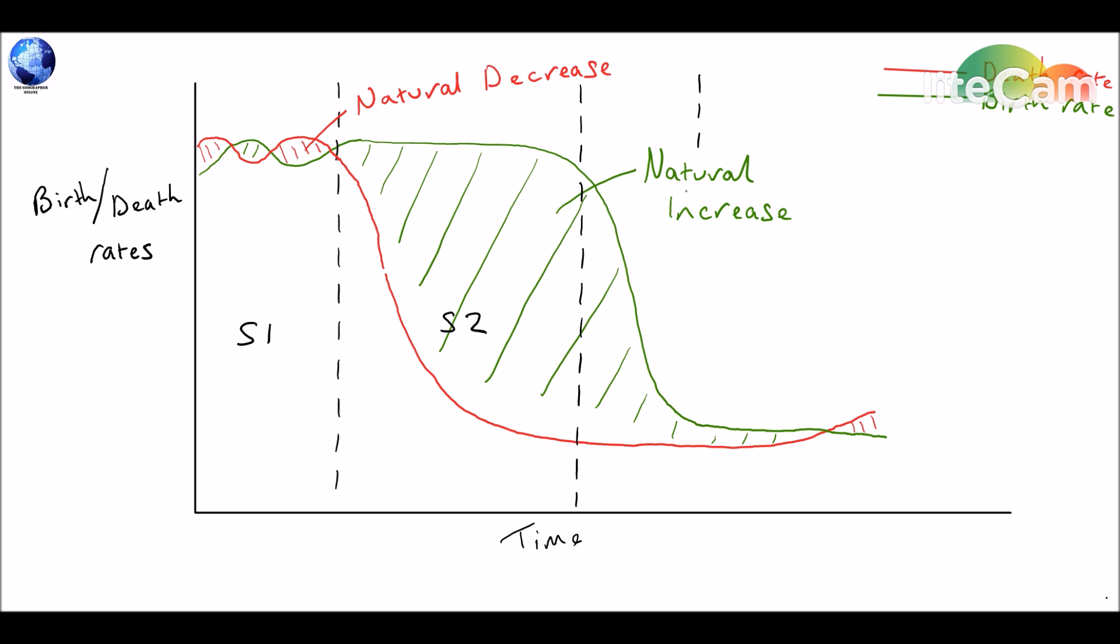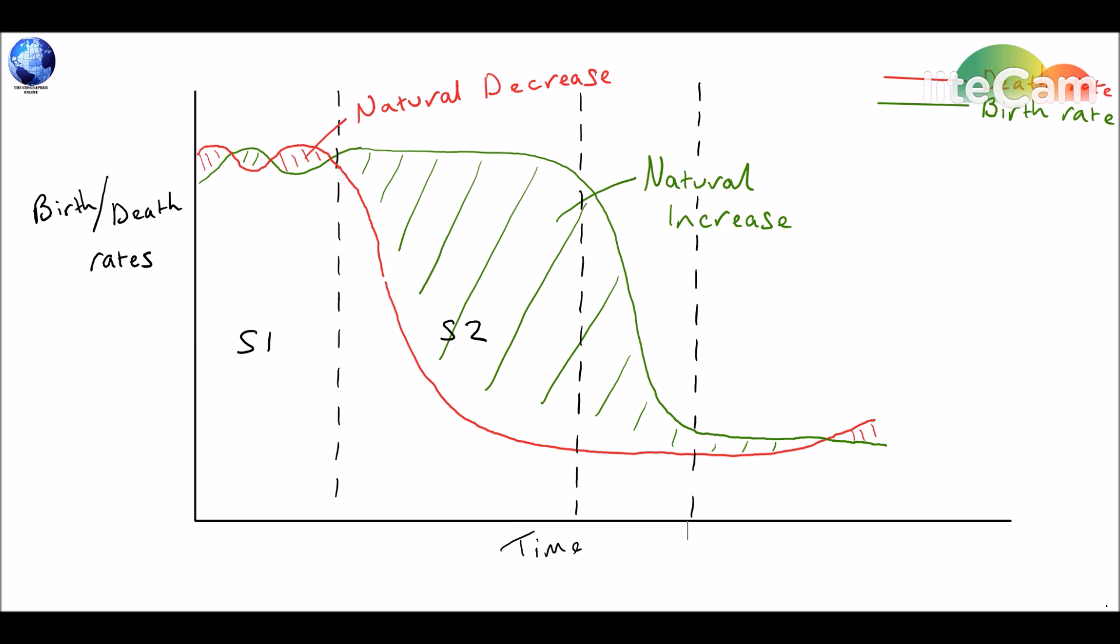Stage three, on the other hand, only occurs when birth rates also begin to fall to try and meet with death rates. So this happens maybe because people become wealthier, women have now more choices, or generally less children are needed because more of them survive through their infancy.